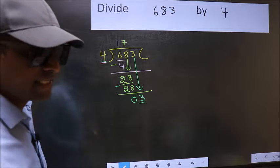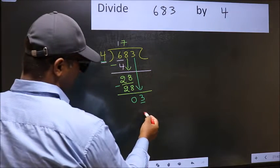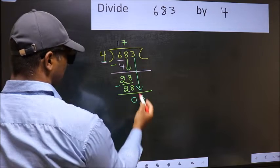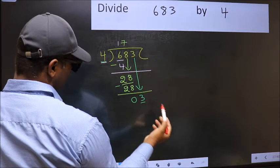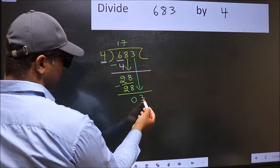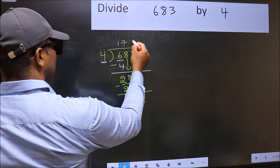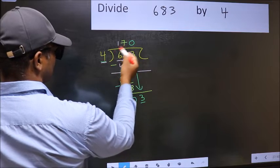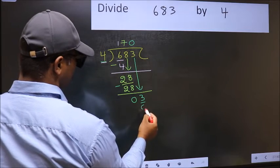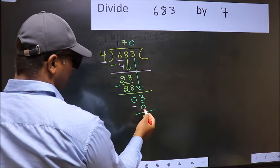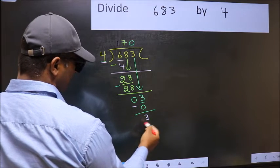what you should think of doing is, what number should we write here? If I take 1 here, we will get 4, but 4 is larger than 3. So what we should do is take 0. So 4 into 0 is 0. Now you should subtract: 3 minus 0 is 3.